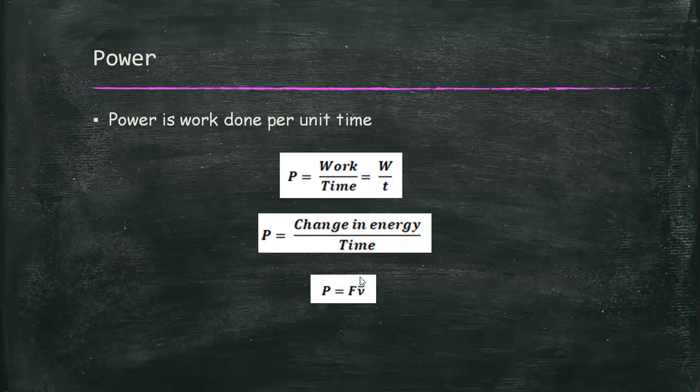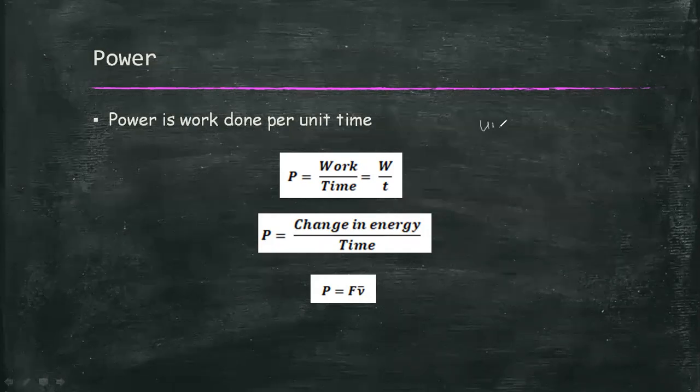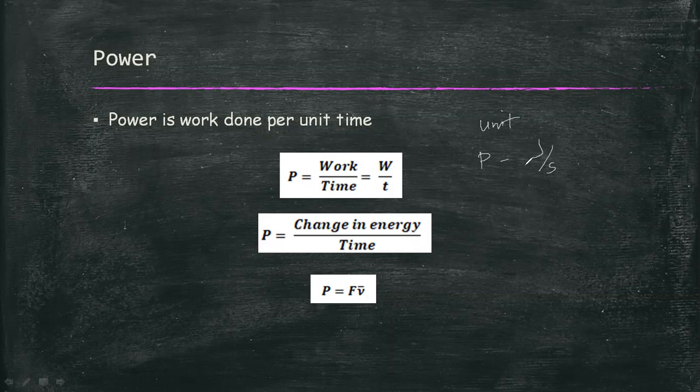Since work, energy, and time are scalar, power is also a scalar quantity. The unit in which power is expressed is that of work divided by time, or joule per second. One joule per second is equal to one watt.